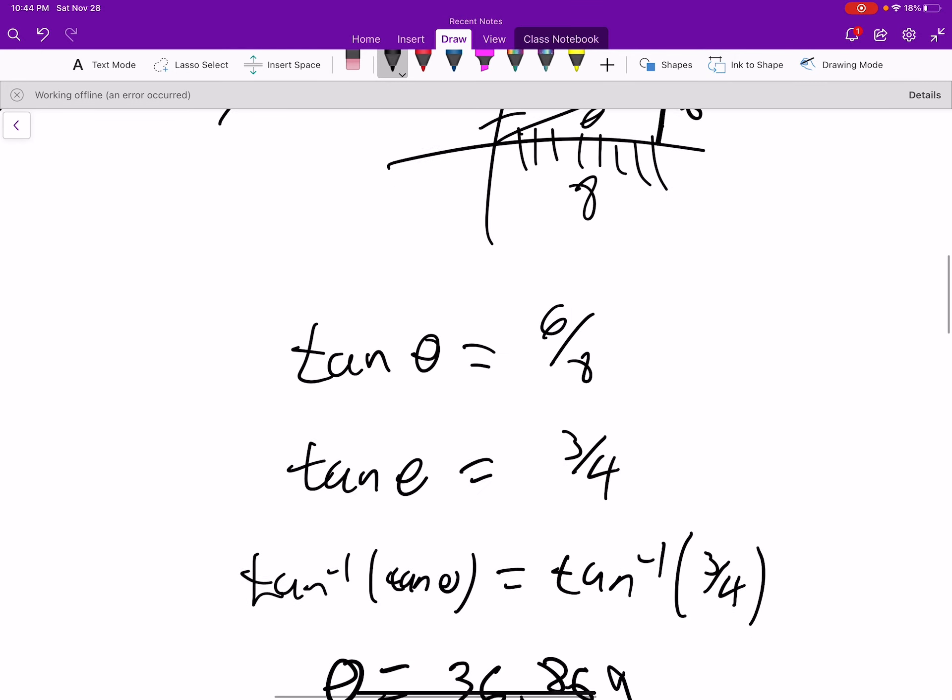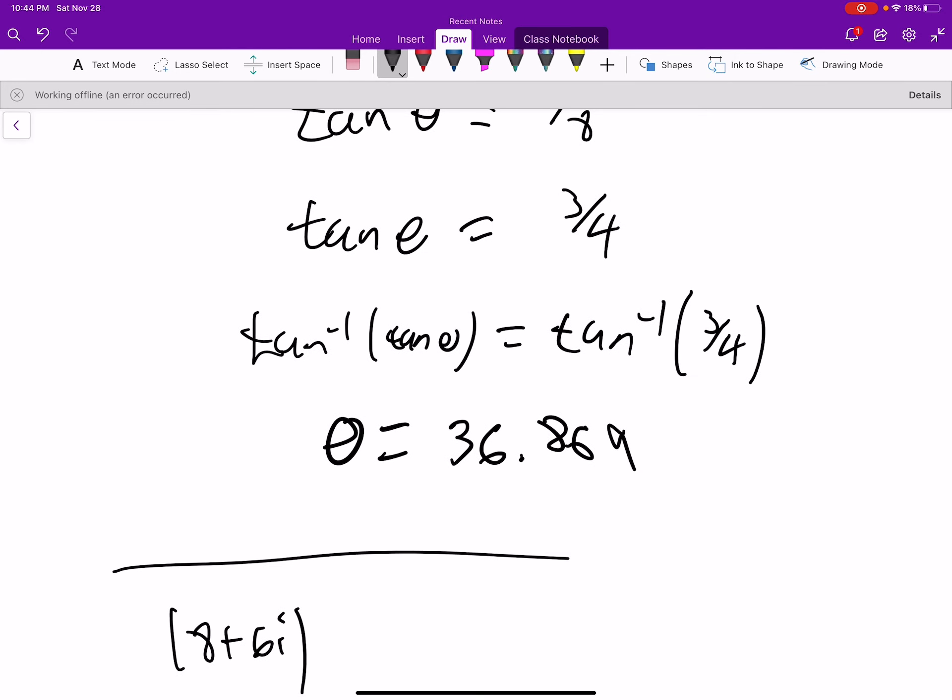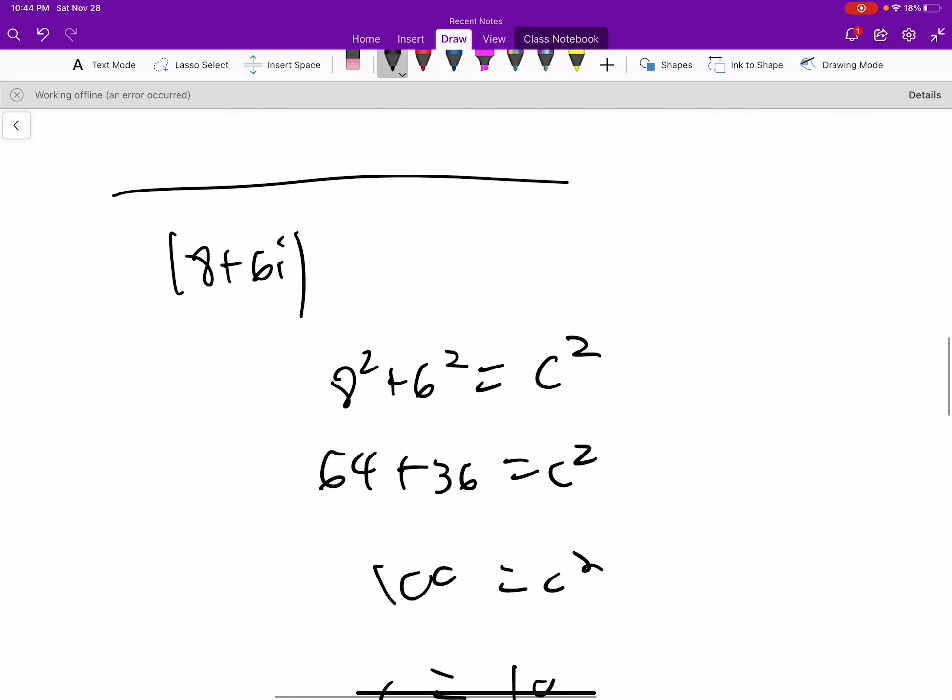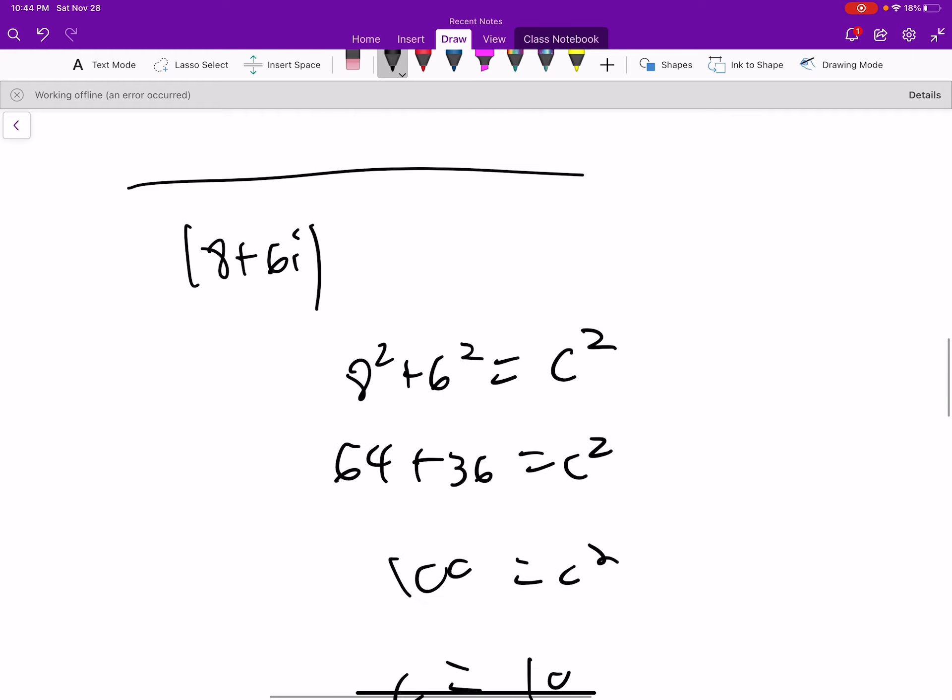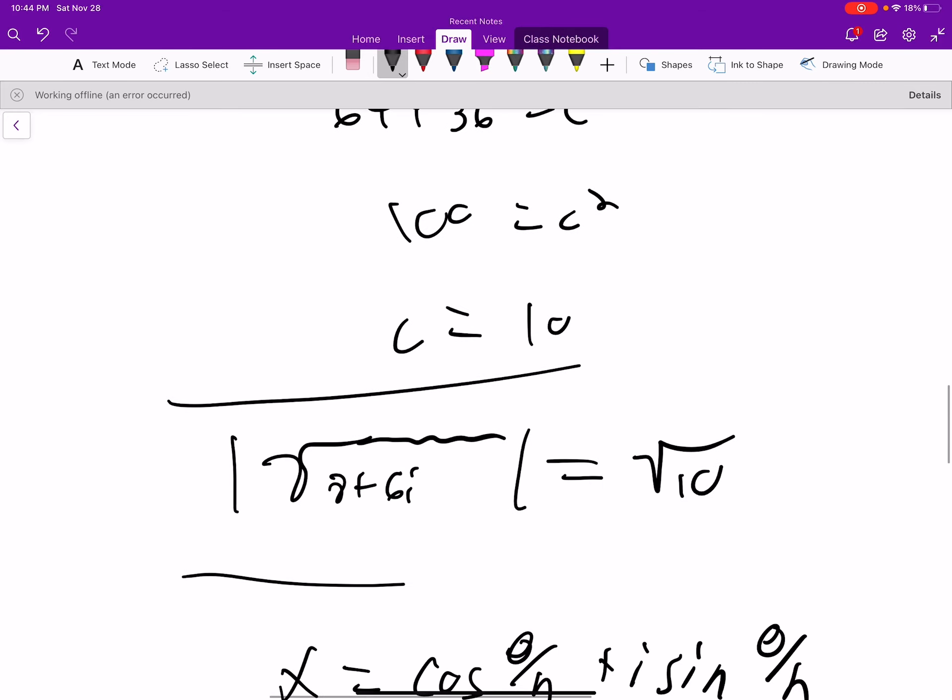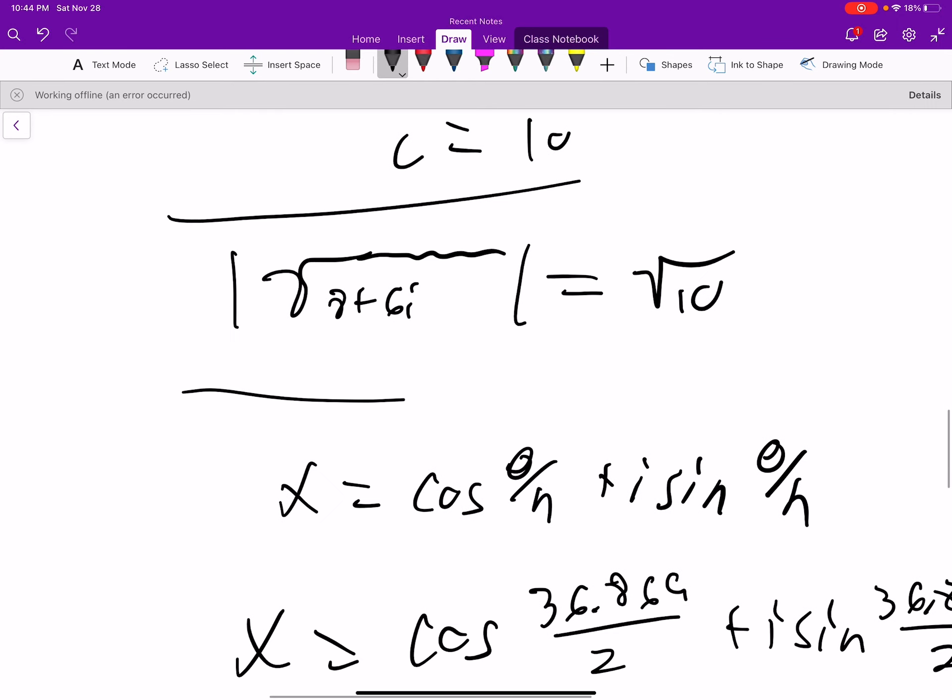We find the angle, which is 36.869. We find the magnitude, which is 10, root of that, because that's the magnitude. 10 is the magnitude of 8 plus 6i, and so we want the magnitude of the root of that, which is going to be root 10.